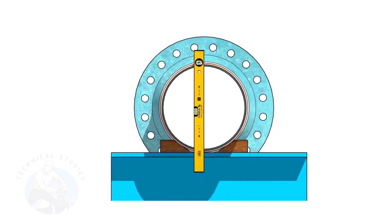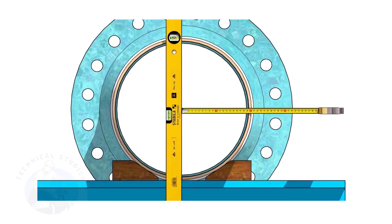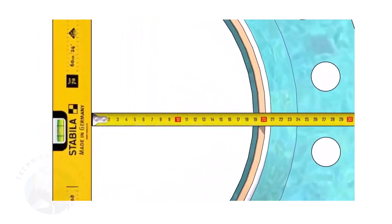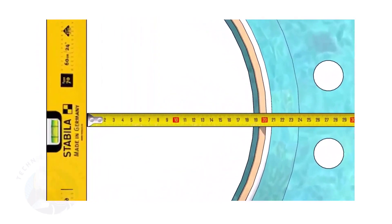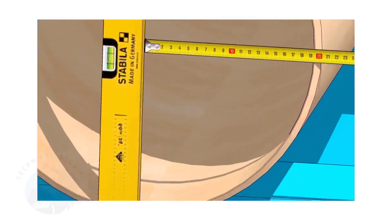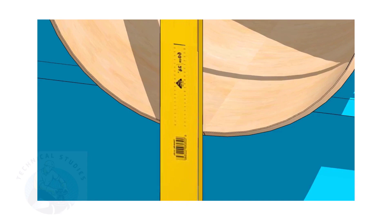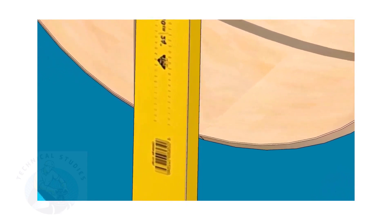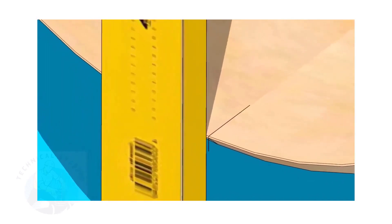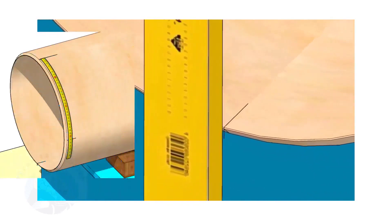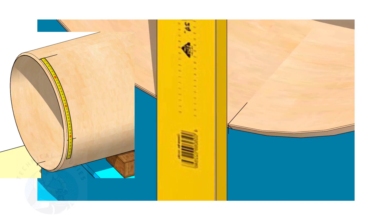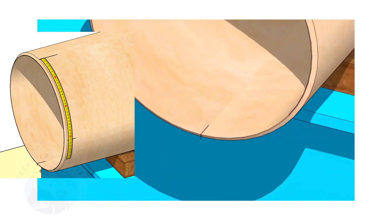Hold the spirit level vertically and transfer the top center mark to the bottom side as shown. Mark the quarter circumference on both sides of the pipe.